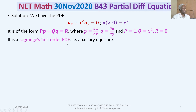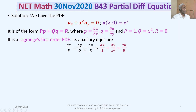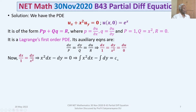It is a Lagrange's first-order Partial Differential Equation. Its auxiliary equations are dx/P = dy/Q = du/R, that is dx/1 = dy/x² = du/0. Taking the first two equations dx/1 = dy/x², cross-multiplying gives x² dx − dy = 0. Integrating both sides: ∫x² dx − ∫dy = c₁.